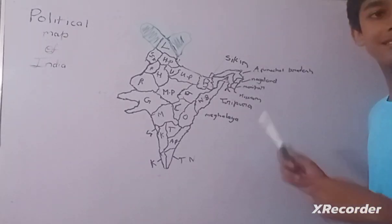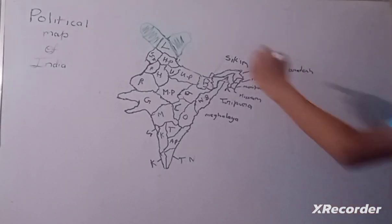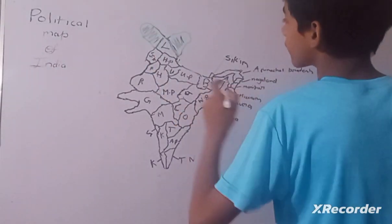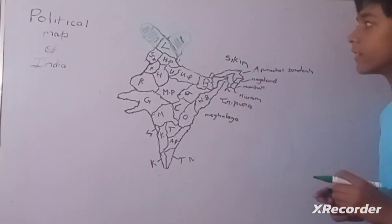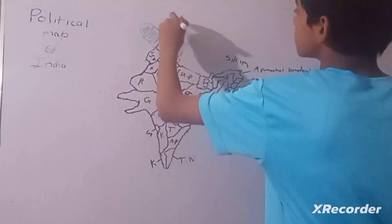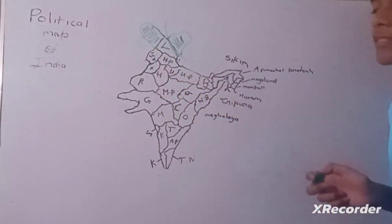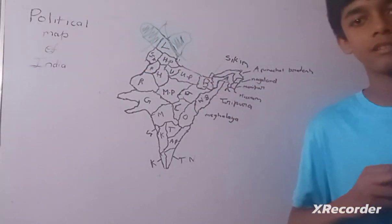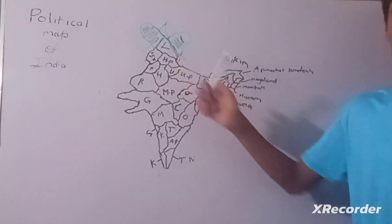The northernmost territory is Ladakh. The green part you can see, earlier Ladakh looked like this and now the green part is occupied by China and this part is occupied by Pakistan.